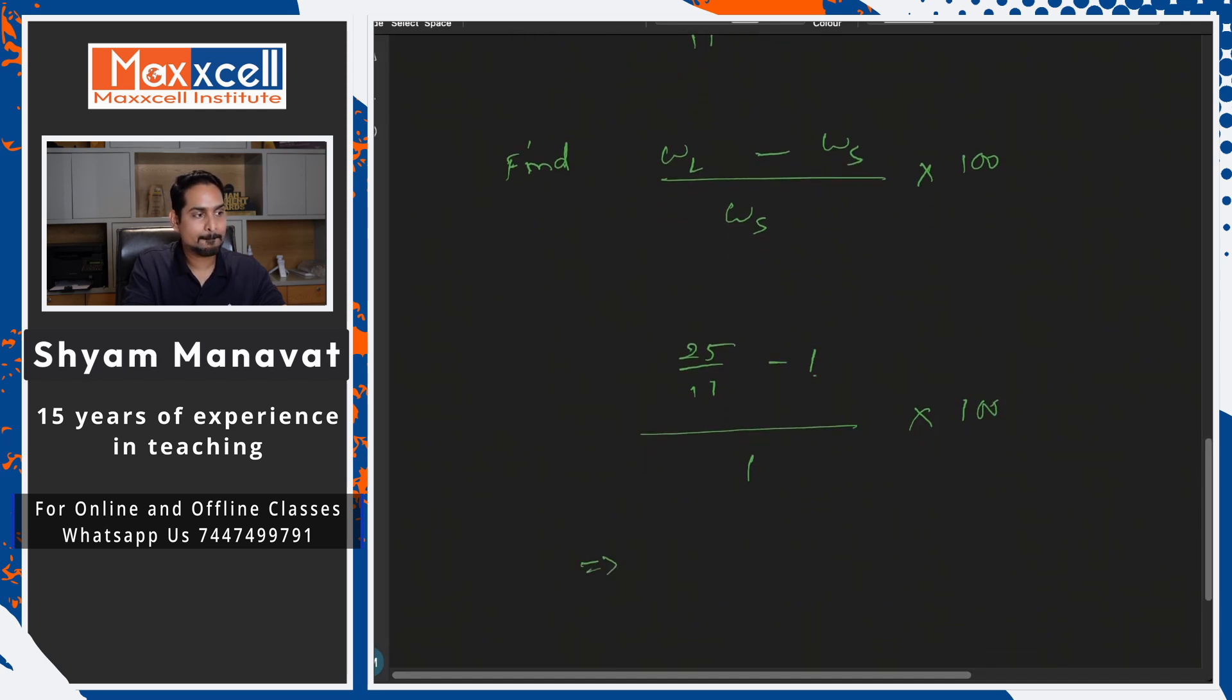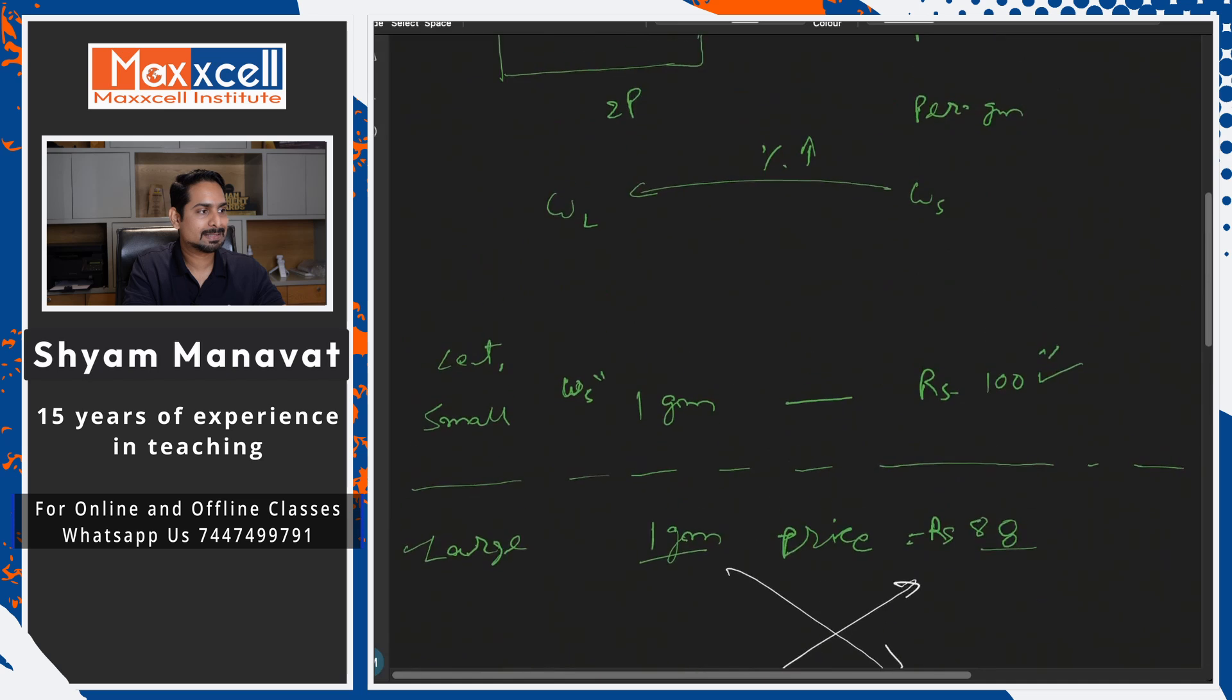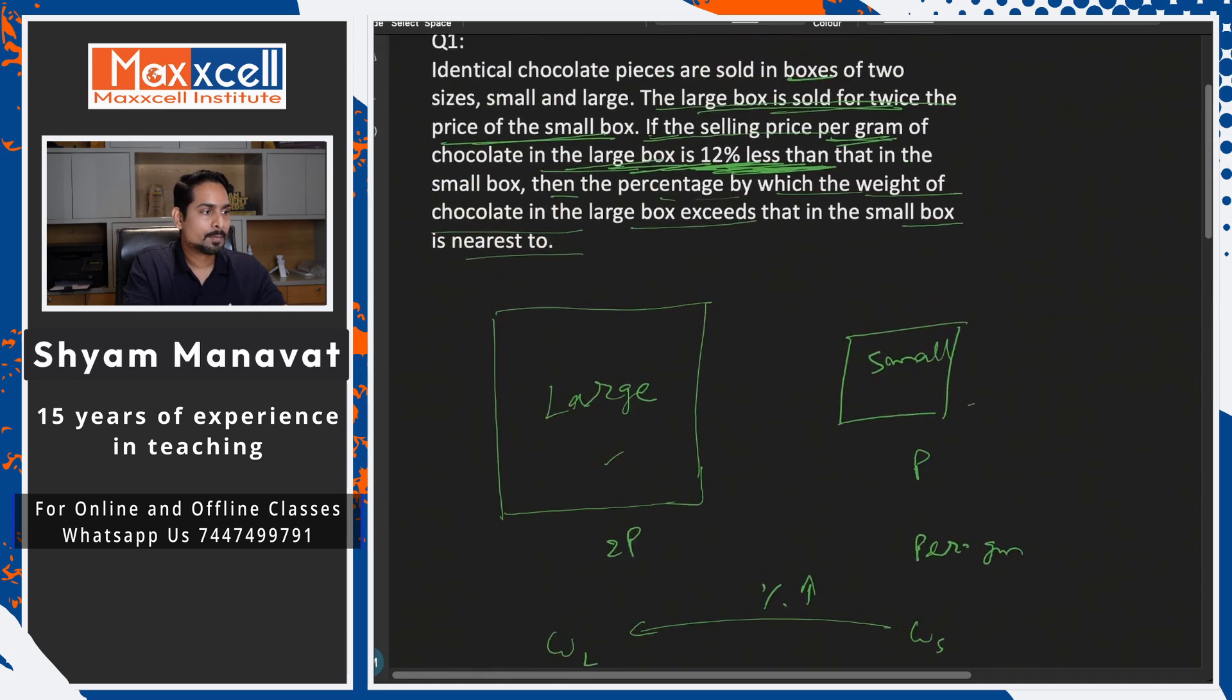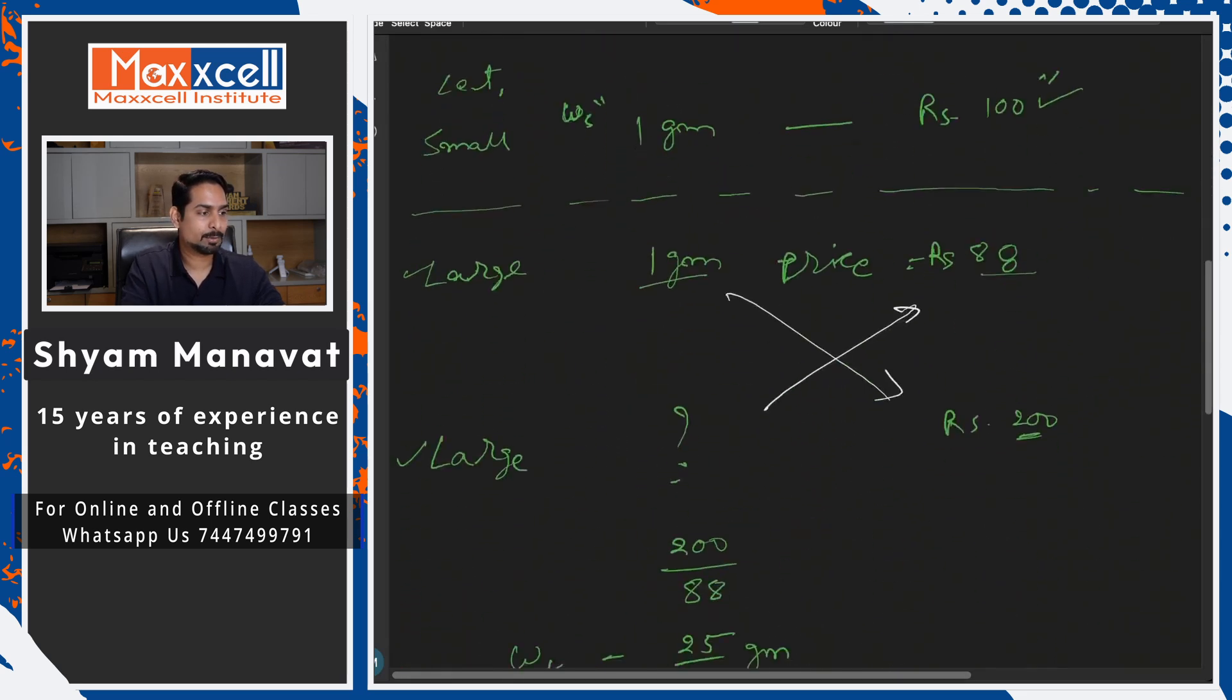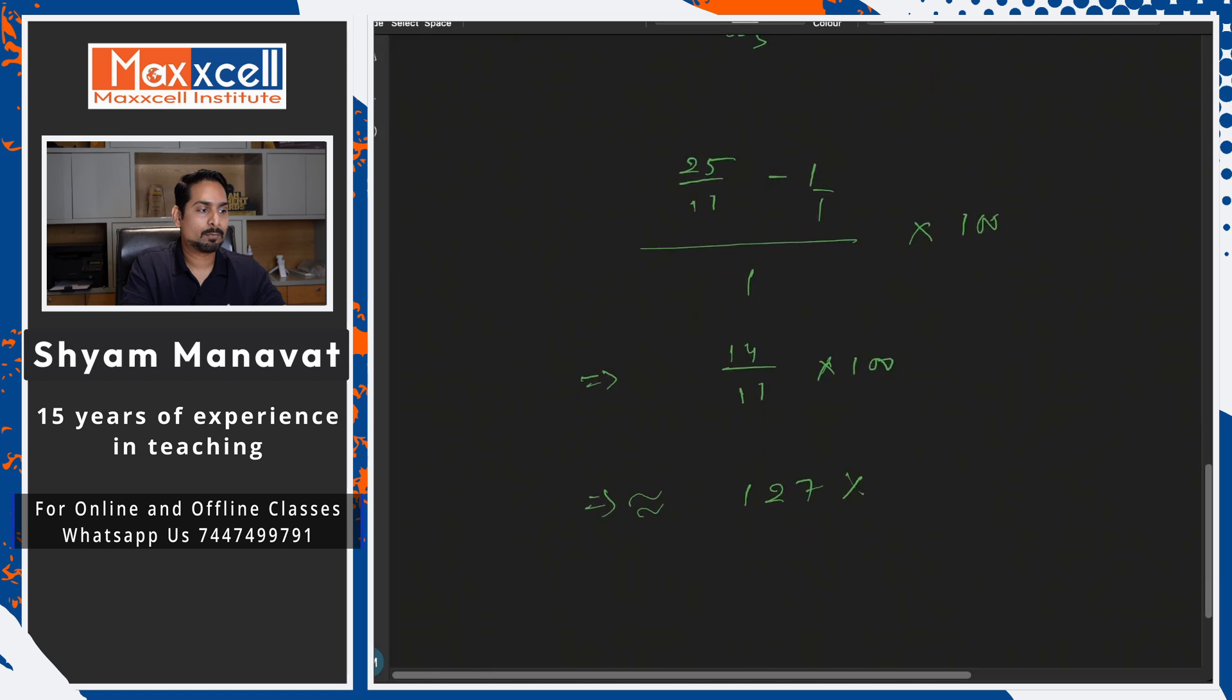Difference is what? Here, 14 by 11 into 100. Denominator, this denominator 1, no need to write. If you simplify this, you get 120% approximately. If you calculate the approximation, you get 127 percent and that is the answer.